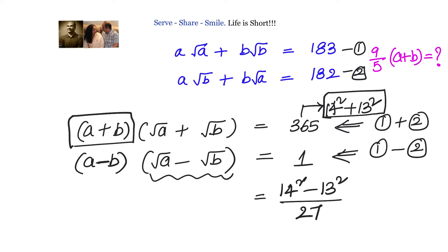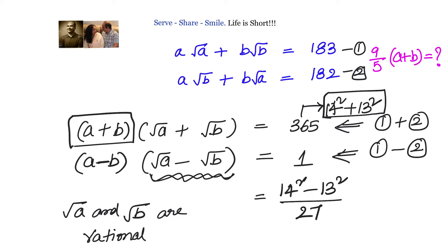Let us stop and think about what values √a and √b can take. We know there are no two integers whose squares differ by exactly 1 — since 1², 2², 3², ... always have differences greater than 1. So √a and √b are not integers; they must be rational numbers, and a and b are perfect squares of rationals.